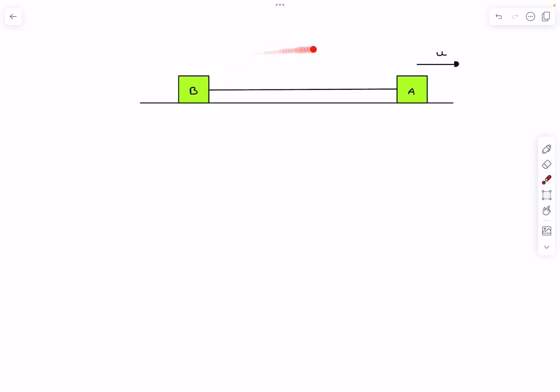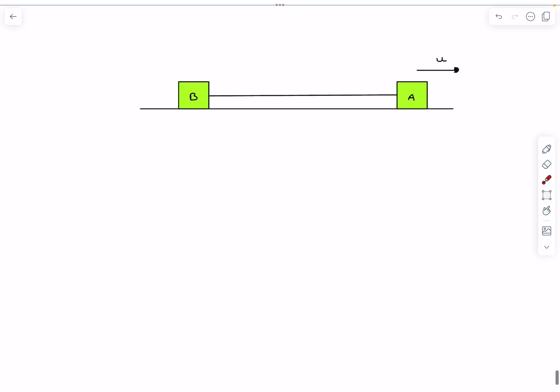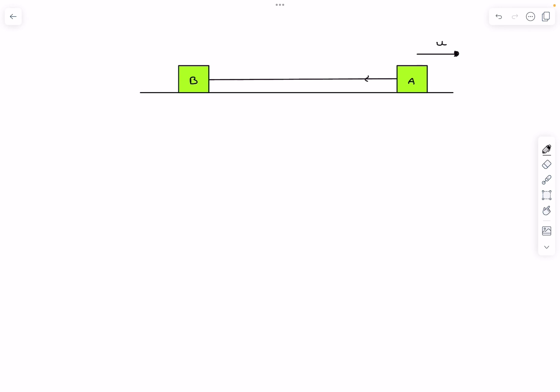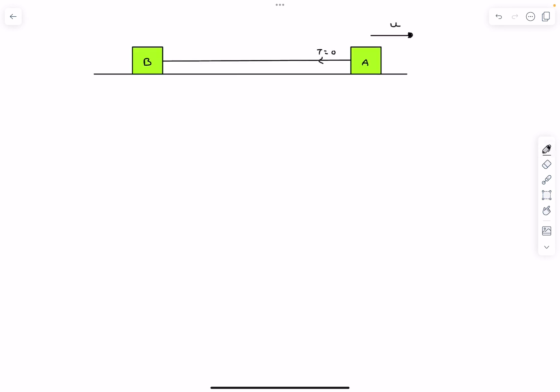This is how the initial situation is looking like. Block a has a velocity of u towards the right, and in the current diagram there is no tension in the string. So this question is best visualized in the center of mass frame. If you don't know how to write the momentum in the center of mass frame, I'll link a video in the description which you can watch and then come back to this.